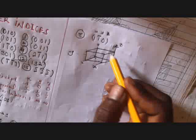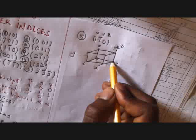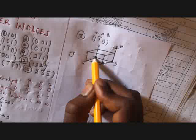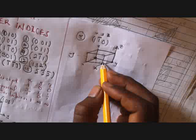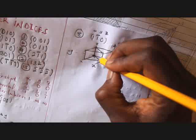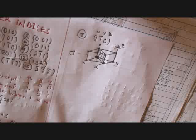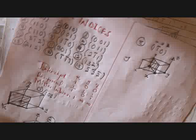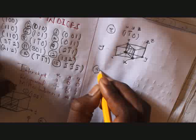For the (1̄10) plane: x goes to 1, the negative y direction goes to negative 1, and z is zero so take the parallel of it in both directions. Add the intercept points together and that gives you the Miller plane for (1̄10).